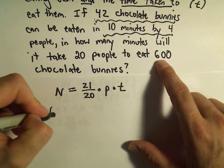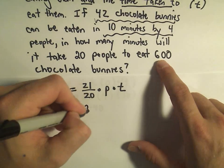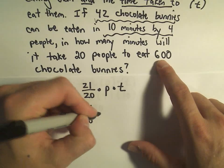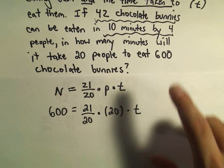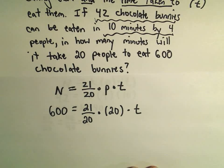So we want to eat 600 total. The number of people in this case is 20 people. The time is what we don't know, so that's what we're going to figure out here.